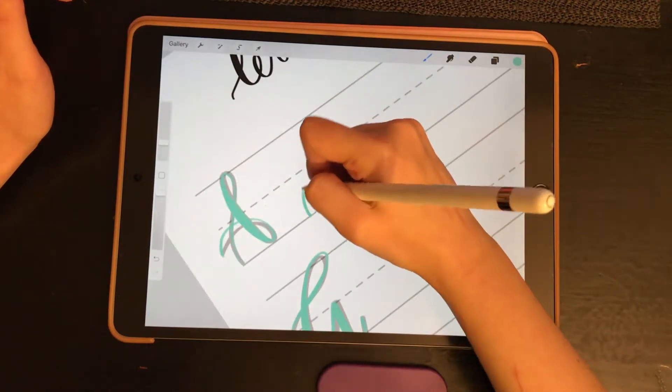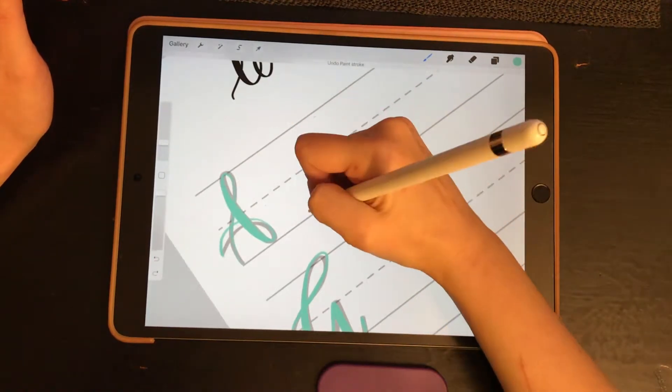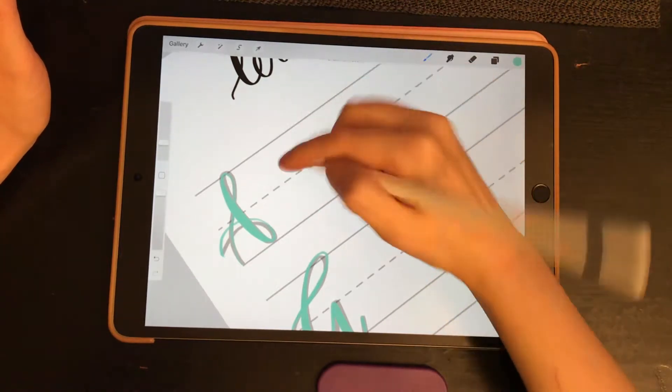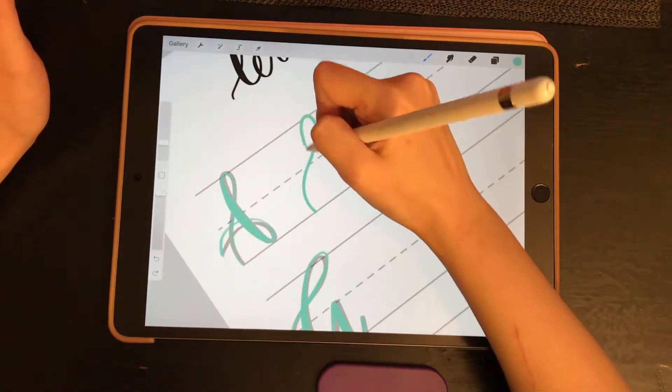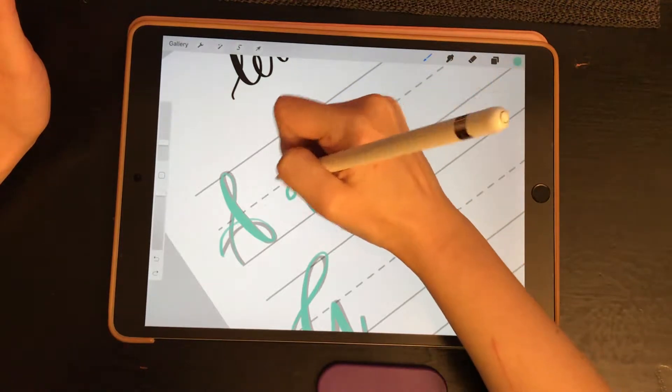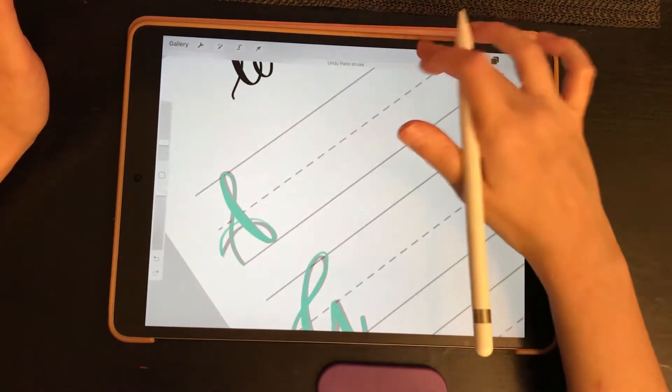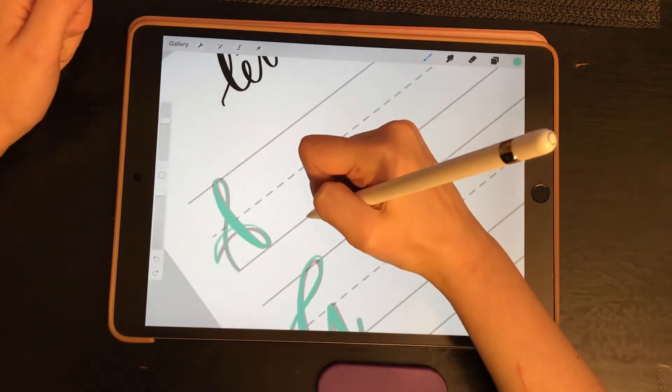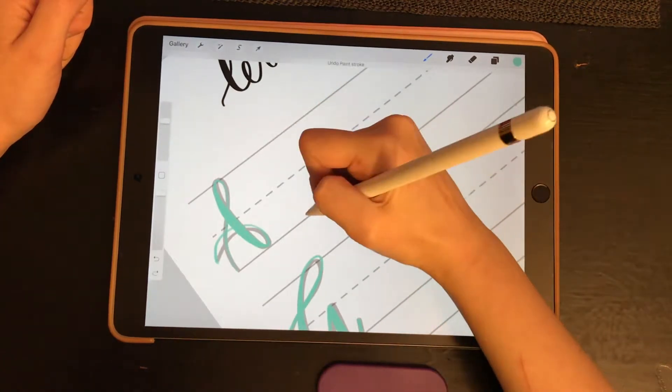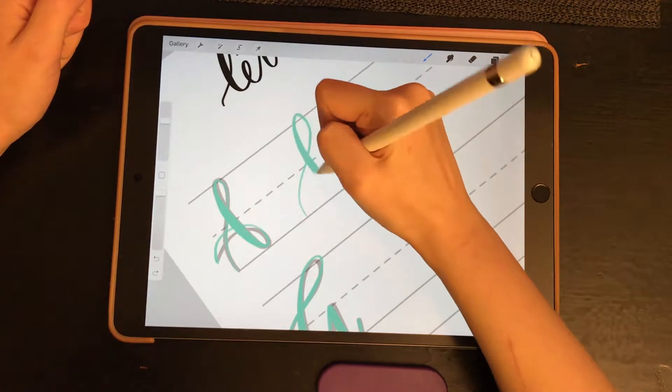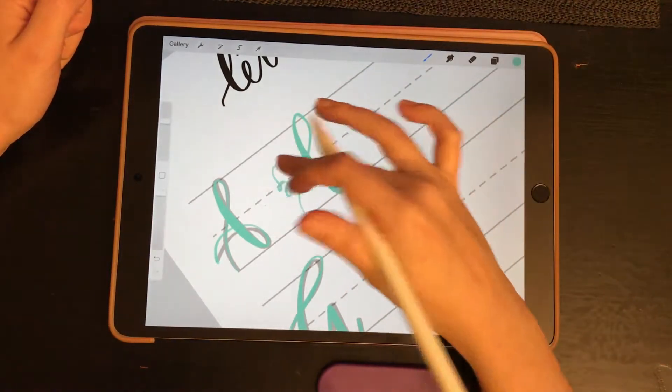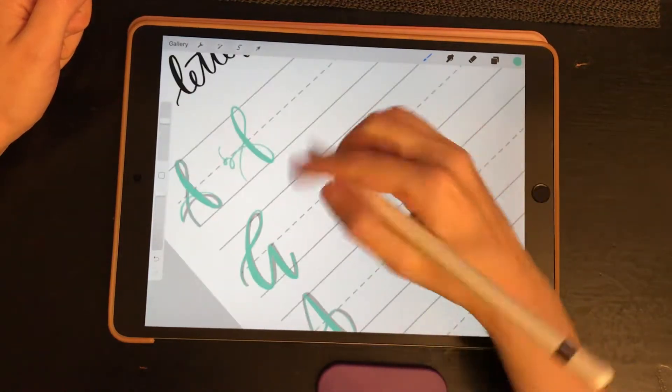But once you get comfortable tracing the letters, then you can kind of go in and make them your own. Like you can, I'm on the mono, that's why I'm like why is this not turning out right.